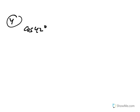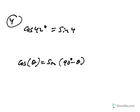Question 4 asks for cosine of 42. There's a rule: cosine θ = sine(90 − θ). This means cosine 42 equals sine 48, because 42 and 48 add up to 90. On the trig table I gave you, cosine 42 wasn't listed, but sine 48 was — that's all that was needed for question 4.